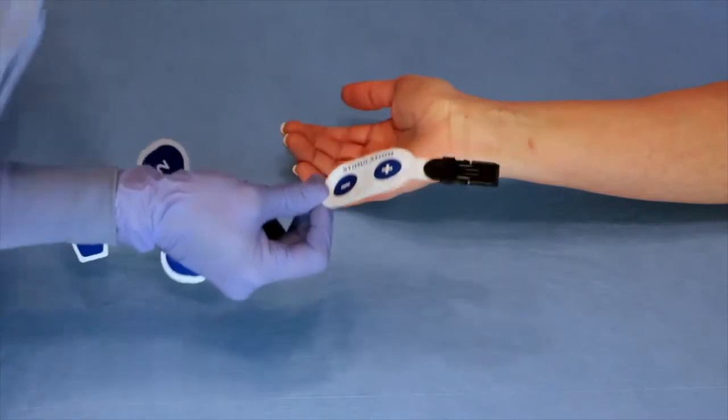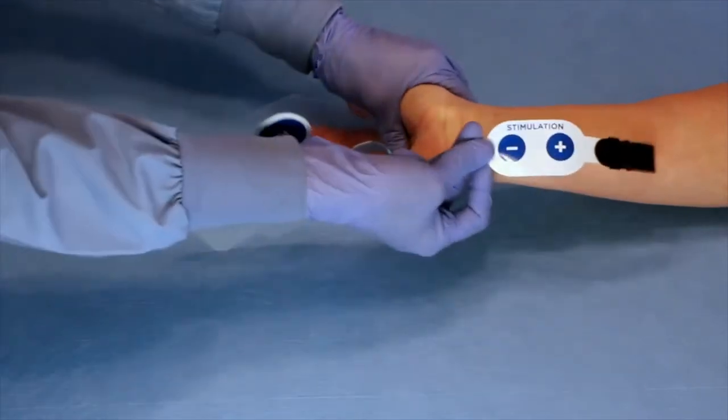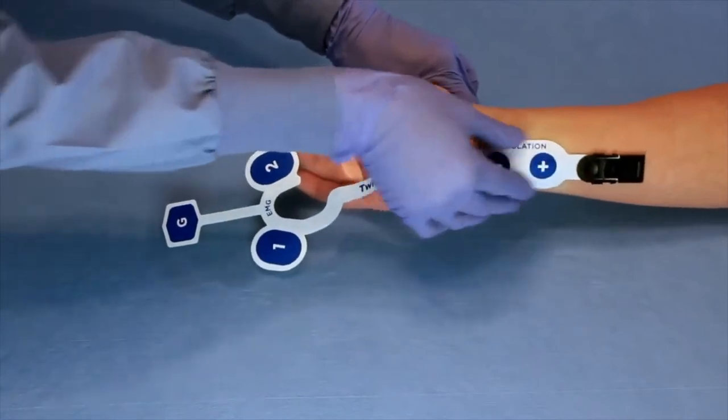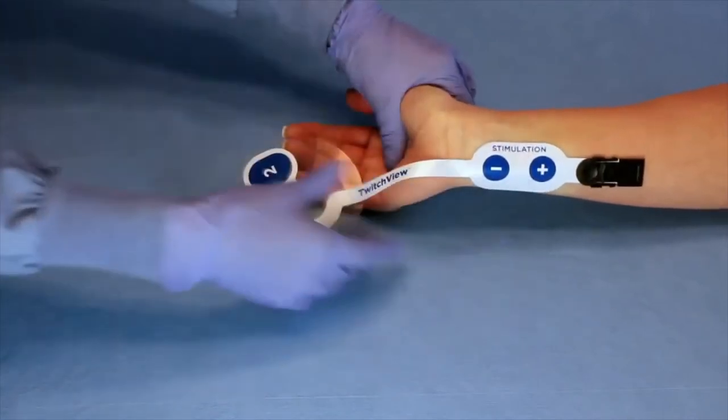Place the stimulating electrodes directly over the groove just proximal to the wrist crease. Press down firmly to ensure adhesion.